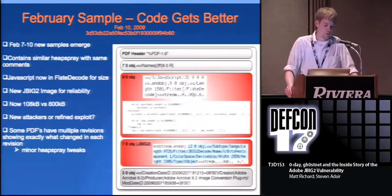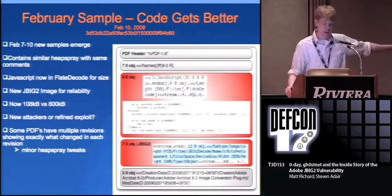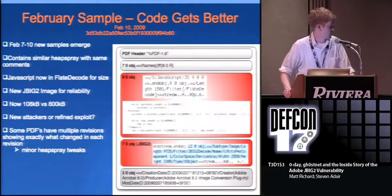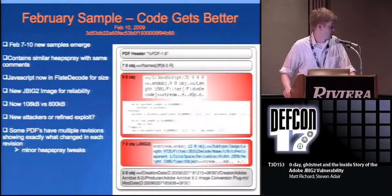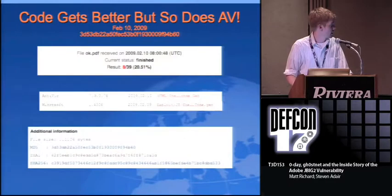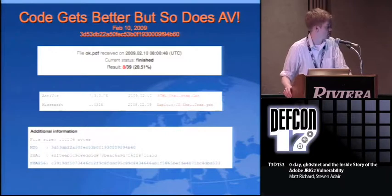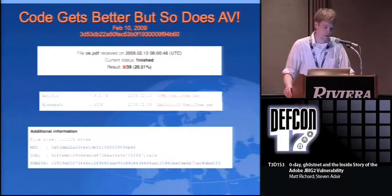Some of the PDFs have multiple revisions showing what changed in each revision. If you look at the bottom, you see the attackers when they started modifying it now have a mod date involving +0800 - again the Chinese timezone. Obviously anyone could set that to anything, but it's where we are once again. Code got a little better, AV detection did too - this time flagging shellcode signatures for a few of them, while others remained the same for the JavaScript. File's a lot smaller.